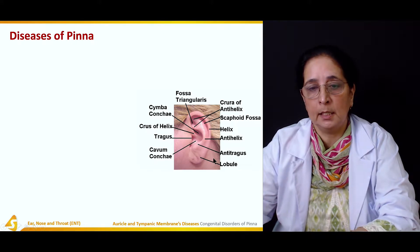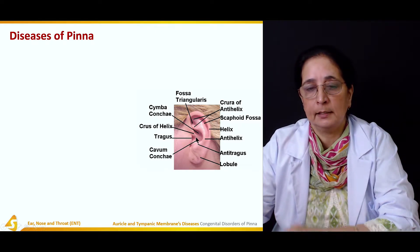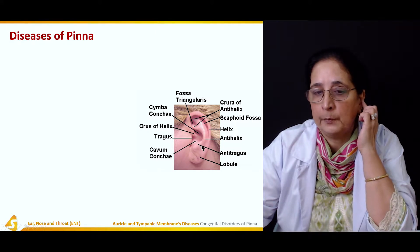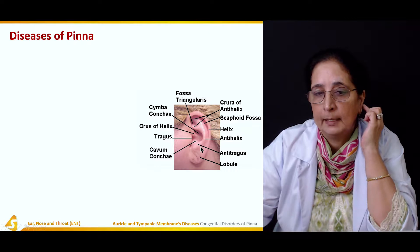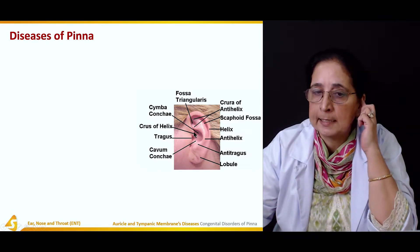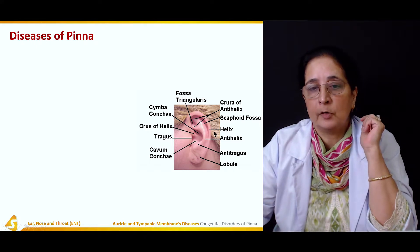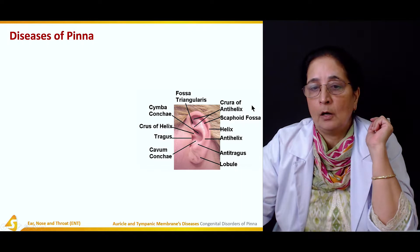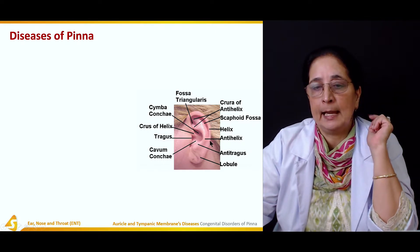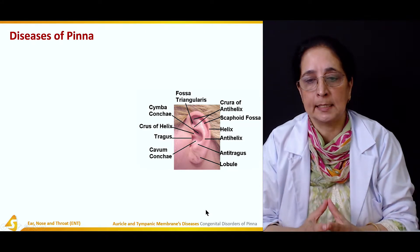Let's go over the structure of the external ear or pinna. We have the lobule of the ear, then antitragus, tragus, and on the opposite we have antitragus. Then we have cavum conchae, crus of helix, cymba conchae, fossa triangularis, crura of antihelix, scaphoid fossa, helix, and antihelix. All these are the different parts of the external ear or pinna.